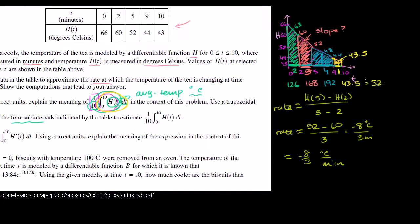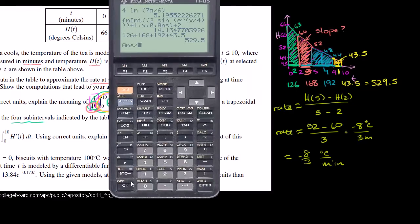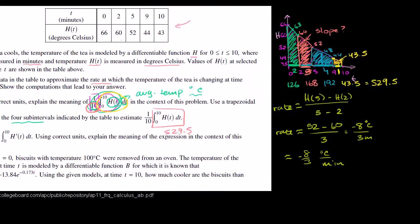So that's our approximation for the definite integral part. But then we also have to multiply by 1/10, or divide by 10. Using the trapezoidal sum we got 529.5, and dividing by 10 gives 52.95. So this whole expression evaluates to approximately 52.95 degrees Celsius. I'll do the next two parts in the next video.